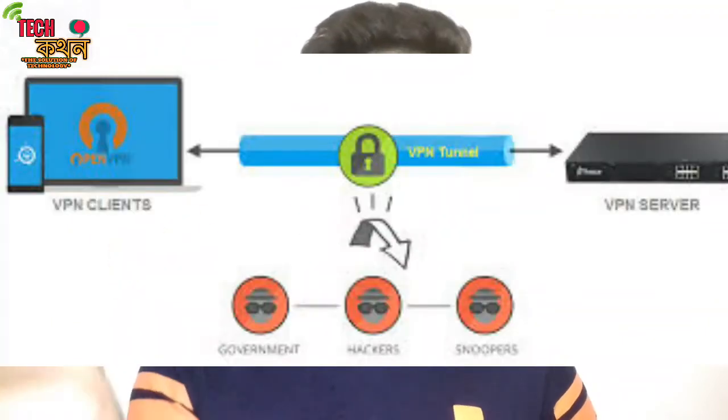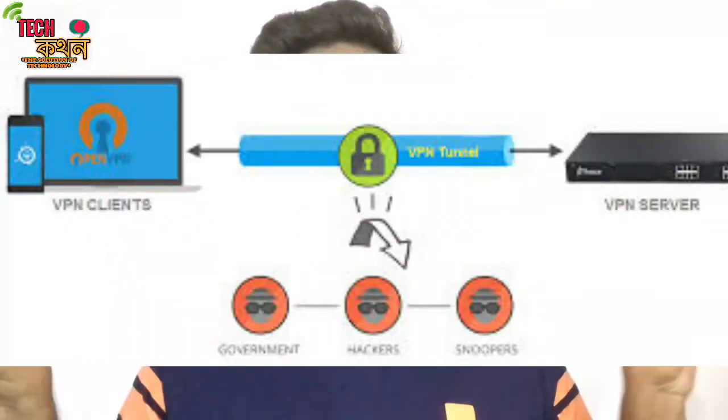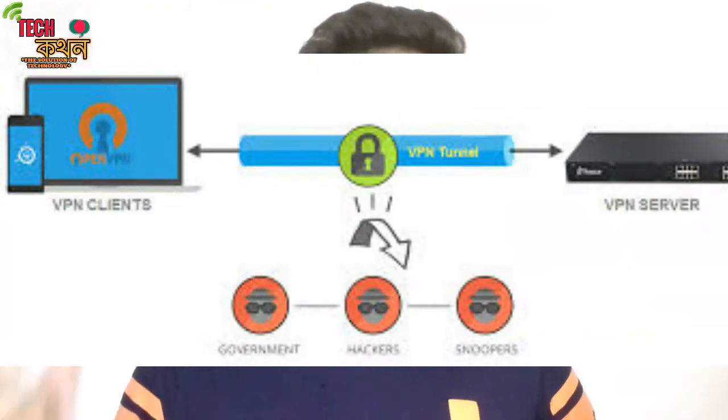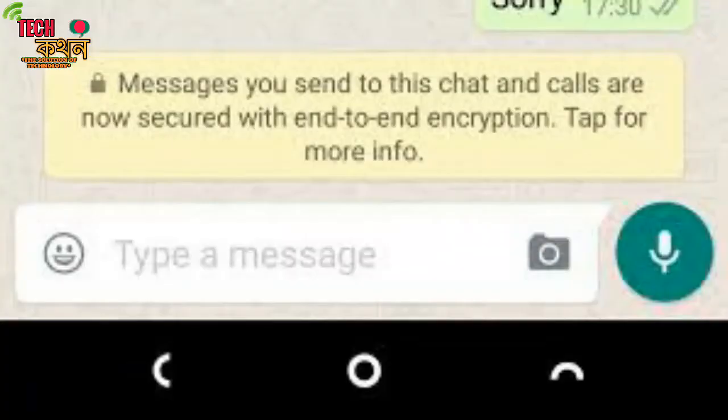When you connect with a VPN server, you will have encrypted connections. When you look at WhatsApp, you can send messages with end-to-end encryption enabled. WhatsApp has encrypted messages. Can you access these messages? Is there an ISP, or can the government access this data?